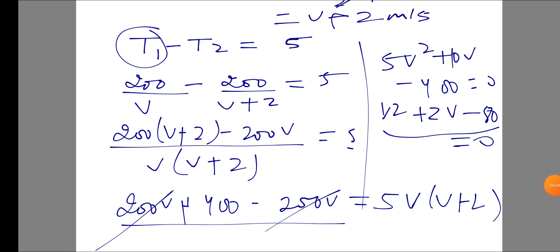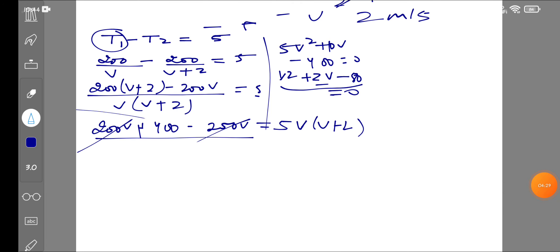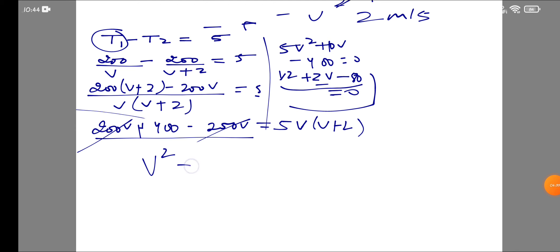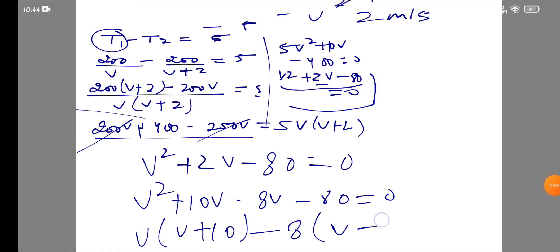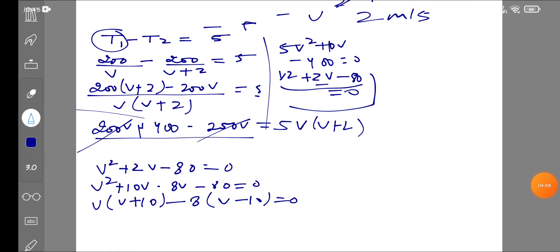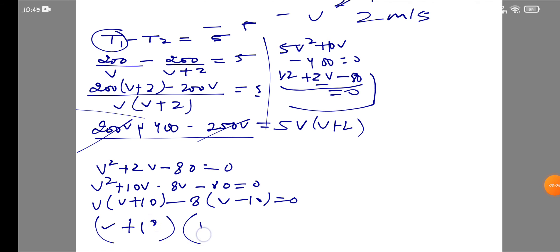Now we need to find two factors of 80 such that their difference gives 2V. The two factors are 10 and 8, since 10 times 8 equals 80. So the equation becomes V² + 10V minus 8V minus 80 = 0. Taking common factors: V(V+10) minus 8(V+10) = 0, giving (V+10)(V-8) = 0.